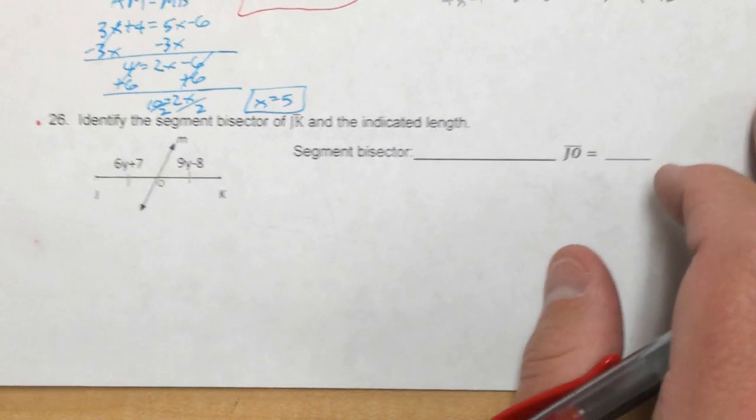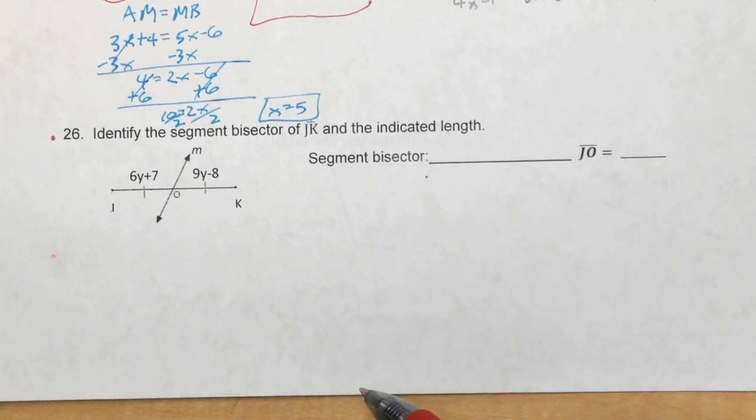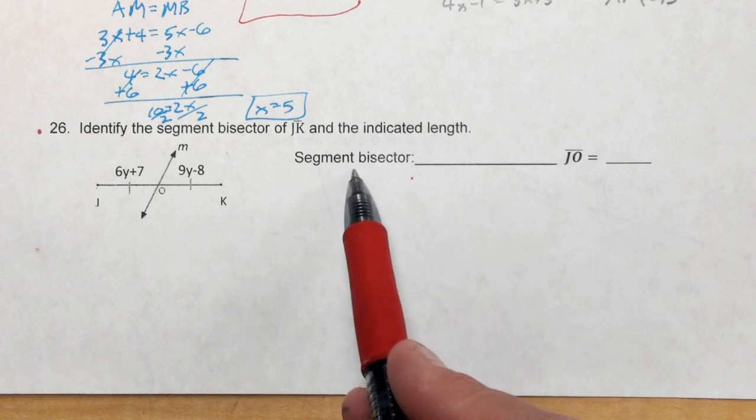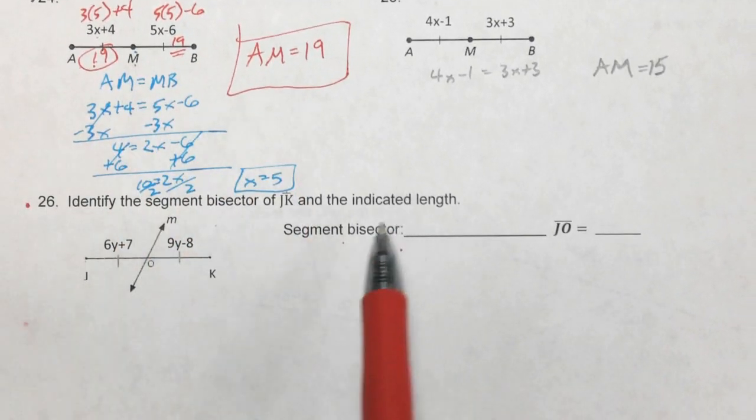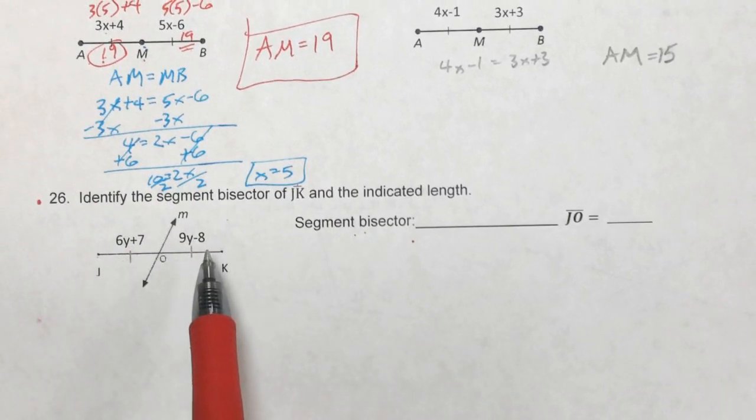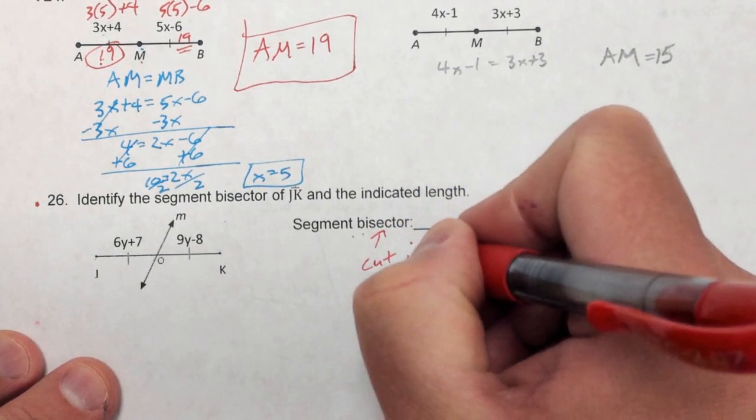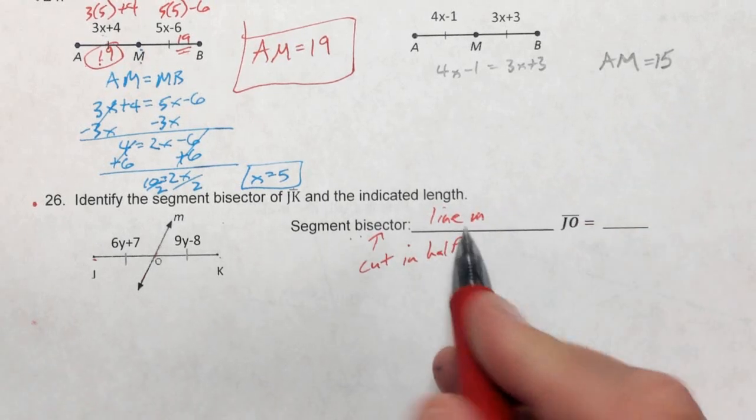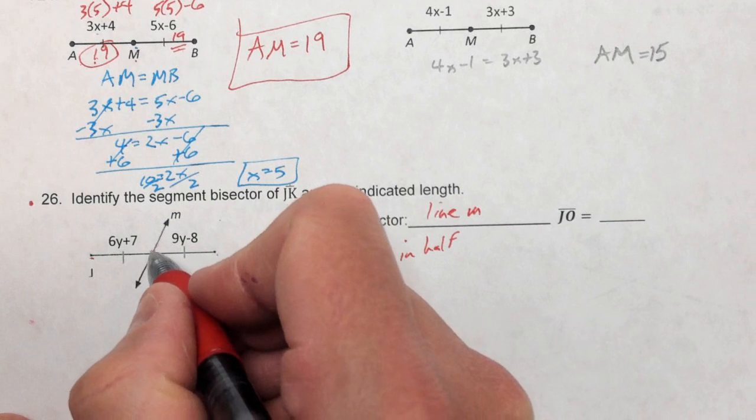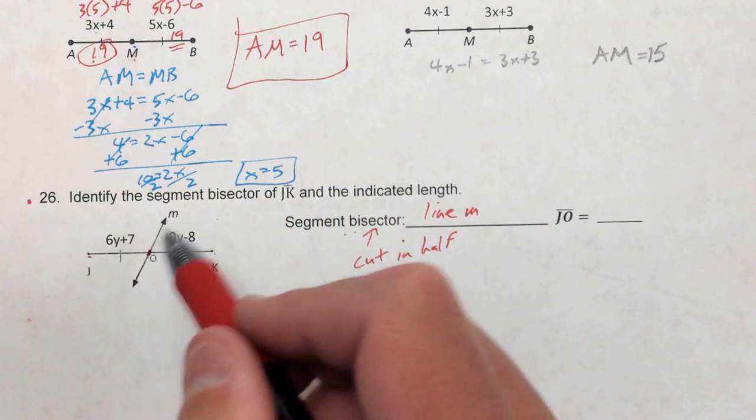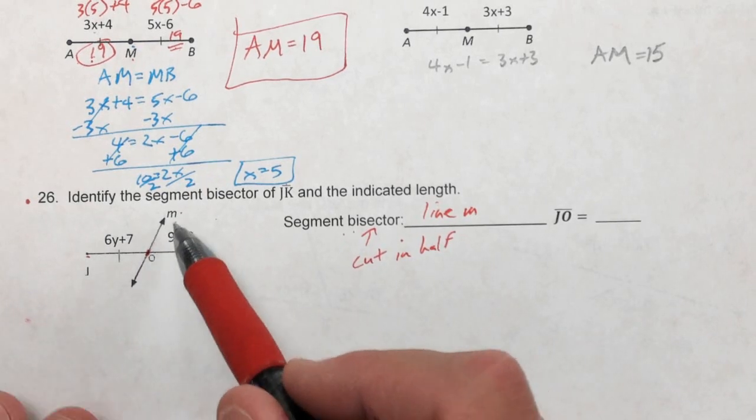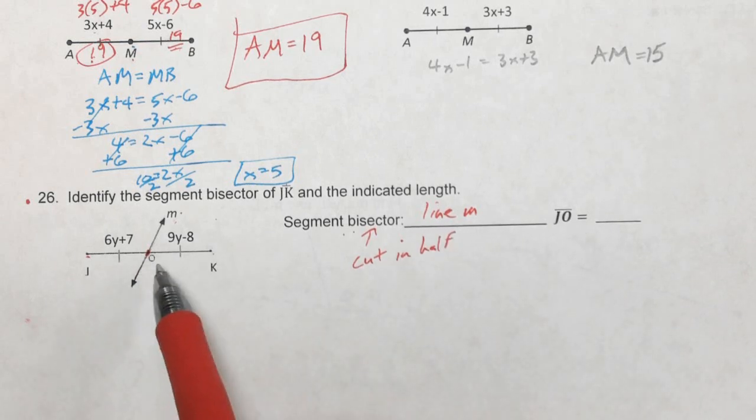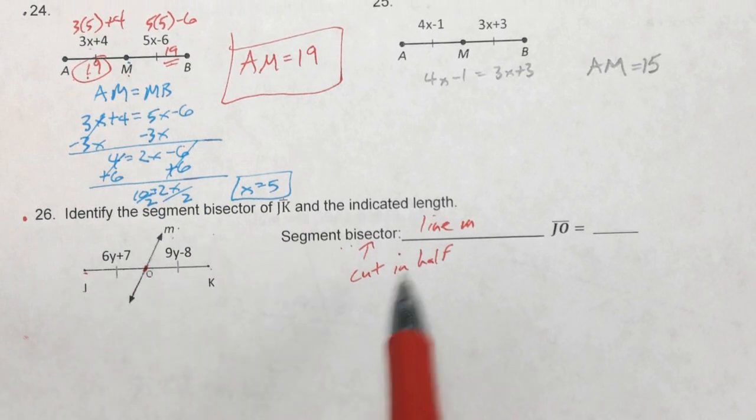26 is a similar problem. I'm not going to solve it all the way. I'm going to do the segment bisector and then you can do the other part. But the idea here is, it says identify the segment bisector of segment JK and the indicated length. So the segment bisector, a segment bisector is like a midpoint. A segment bisector is what is causing the segment to be cut in half. Because bisect means to cut in half. So what is cutting segment JK in half? It's this line here. It's line M. So the segment bisector is line M. Keep in mind here, O is the point right here. M is just a lowercase letter at the end of this line. So you can name this line M. You cannot call this line OM because M is not a point. It's just another name for this line. So this is the only correct answer for this. Beyond that, I'm not going to solve 26 because you solve it exactly like I did 24. I just wanted to go over the segment bisector.